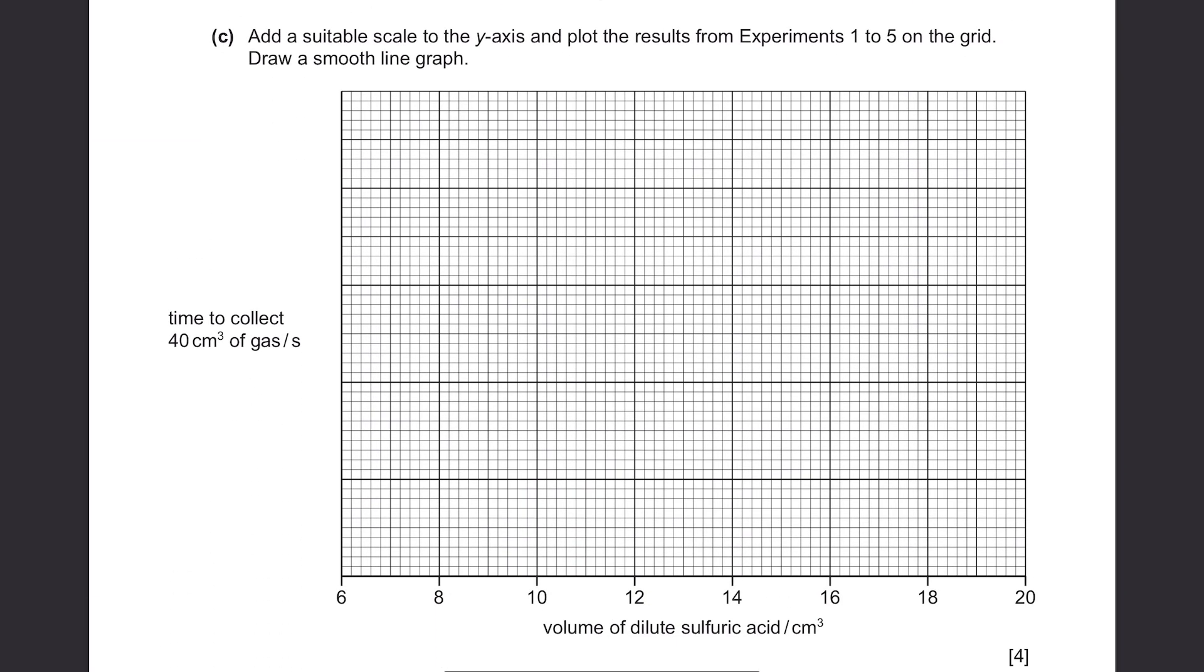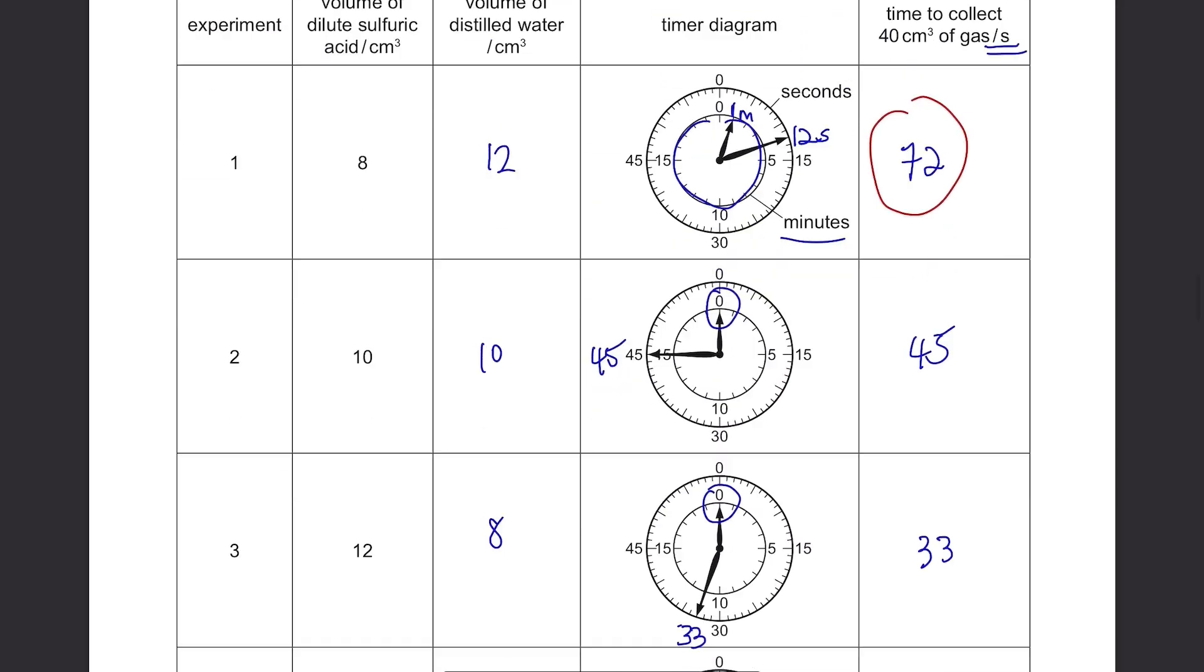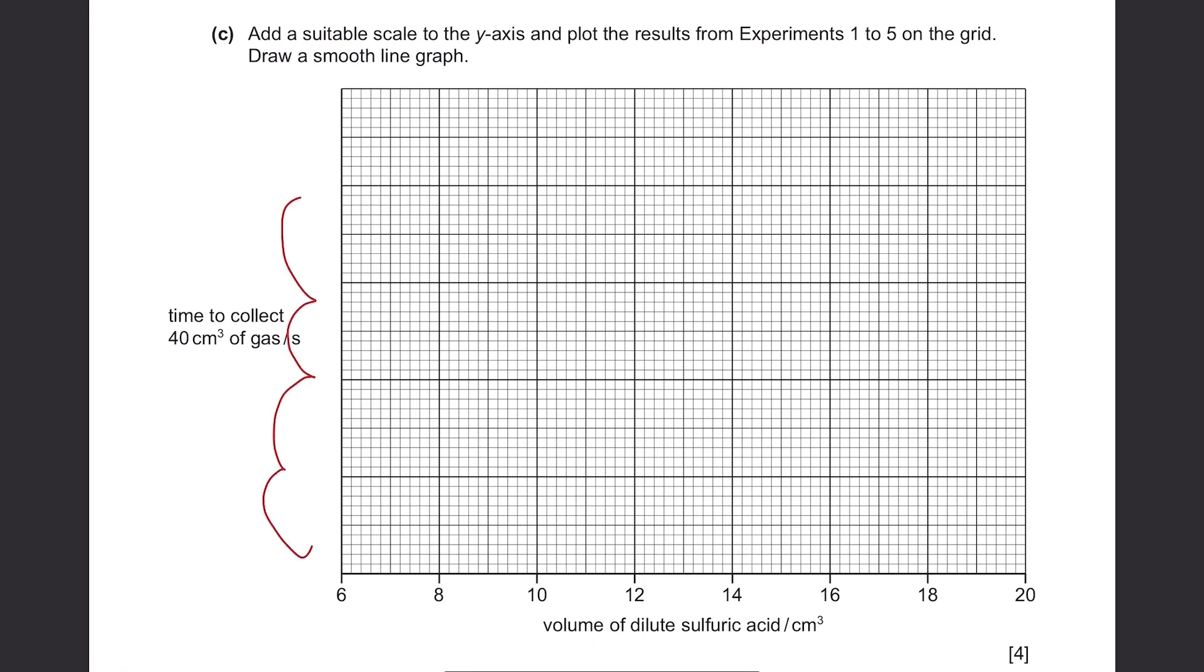Part C. Add a suitable scale to the y-axis and plot the results from experiments 1 to 5 on the grid. Draw a smooth line graph. They've already told us which one goes to which axis. We just need to form the scale for y-axis. The range of y-axis, which is up to 72 from 16. And we have 1, 2, 3, 4, 5 big squares. Well, I just put it as from 0, 20, 40, 60, 80, and 100. And then you plot the graph and draw a best fit line.